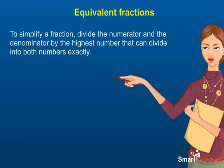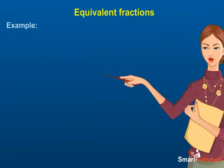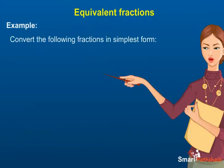To simplify a fraction, divide the numerator and the denominator by the highest number that can divide into both numbers exactly. Let us see some examples. Example: convert the following fractions in simplest form.